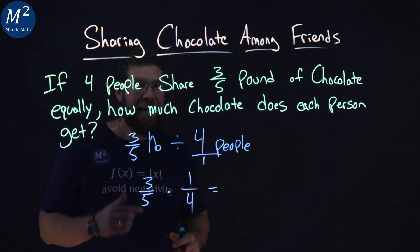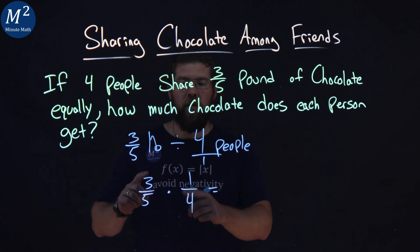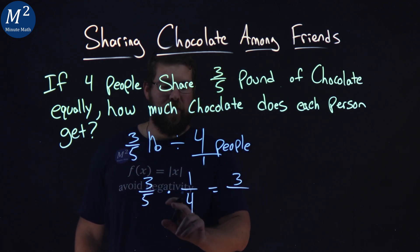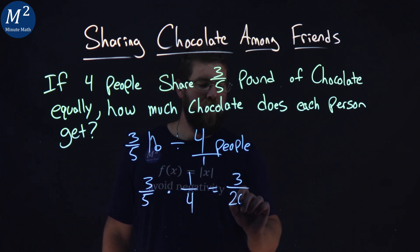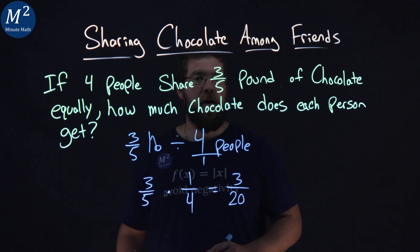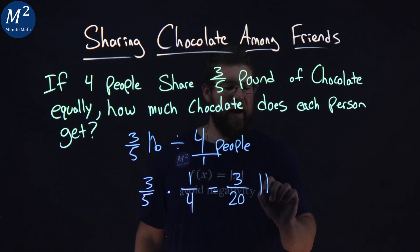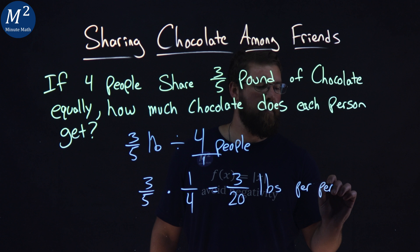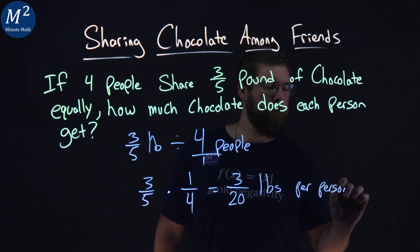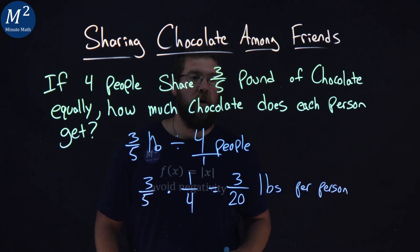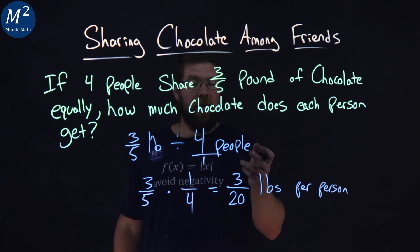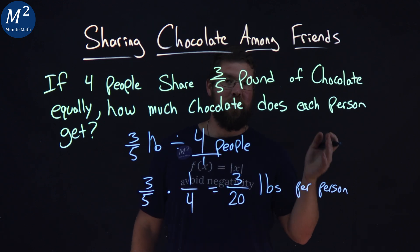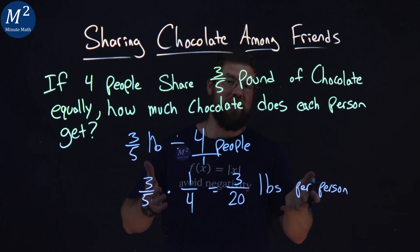We multiply that out. Three times one is three. Five times four gives me twenty. So we have three over twenty pounds per person. Each person gets three-twentieths pounds of chocolate.